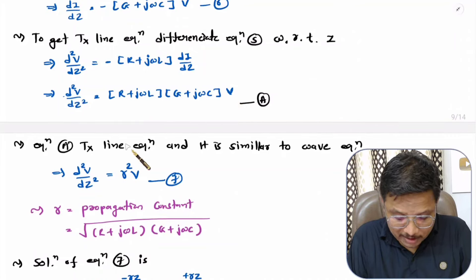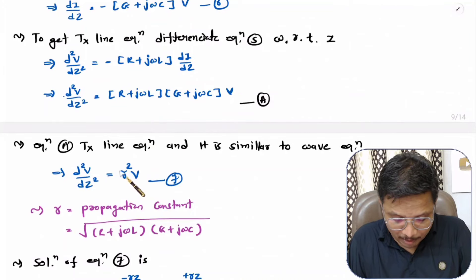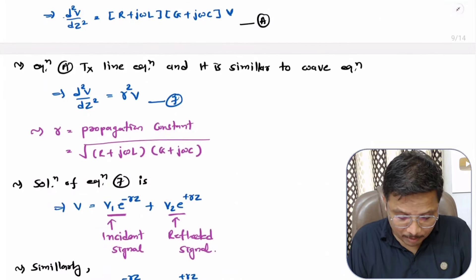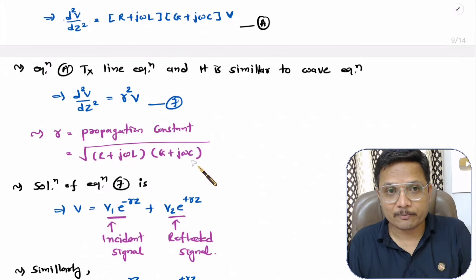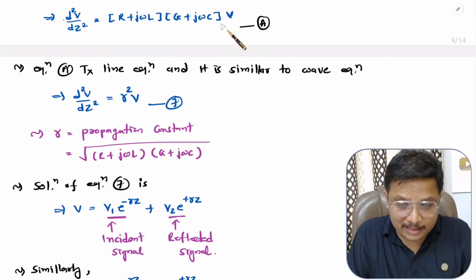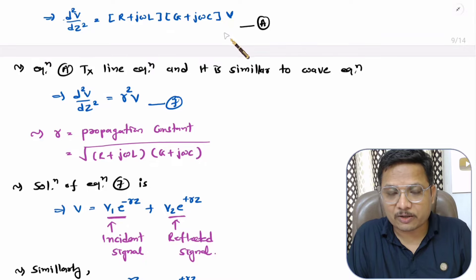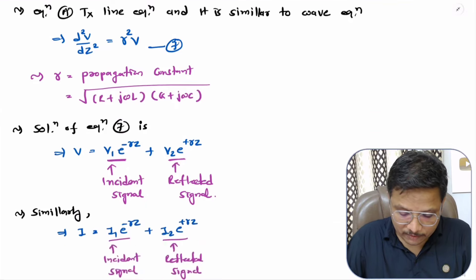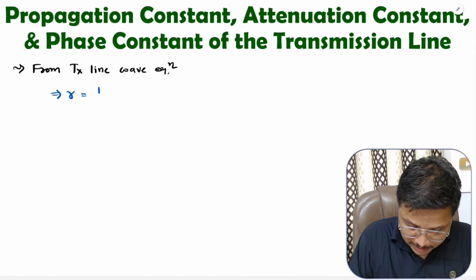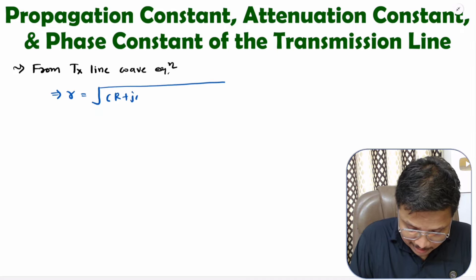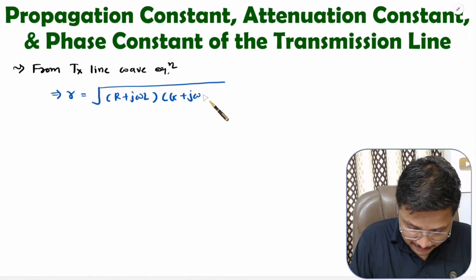If you compare this equation with the wave equation, you will identify the propagation constant. The propagation constant will be the square root of (R + jωL)(G + jωC). Let me note it down: propagation constant γ = √[(R + jωL)(G + jωC)].